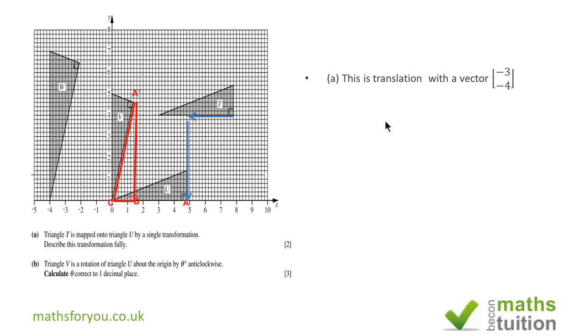Looking at triangles T and U, the area seems to be the same. There is no difference in the orientation either, so this suggests to me that this is transformation by translation.